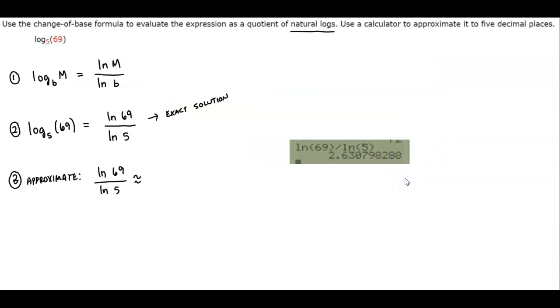Okay, so you want to round it to five decimal places. So that means that this is going to have to go up to 0, which makes that 8. So this is going to be 2.63080.